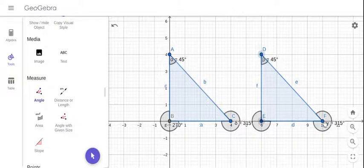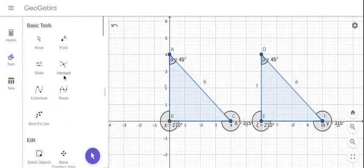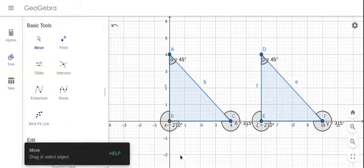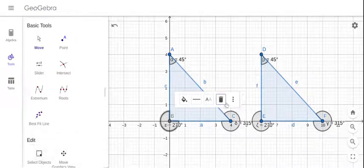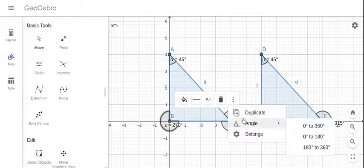Now I'm going to quickly change my settings for my angles so that it doesn't measure external angles. Simply by clicking on any of the angle I can say that I want it between 0 to 180.